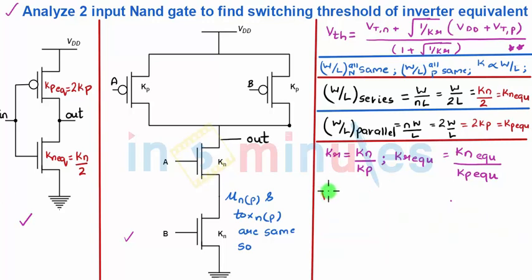So, just write it VTH equal to, this is nothing but switching threshold equal to threshold voltage of NMOS plus we already had a term square root of 4KP by KN. I am going to take 2 outside that will leave me because if it was under the square root it would be 4.